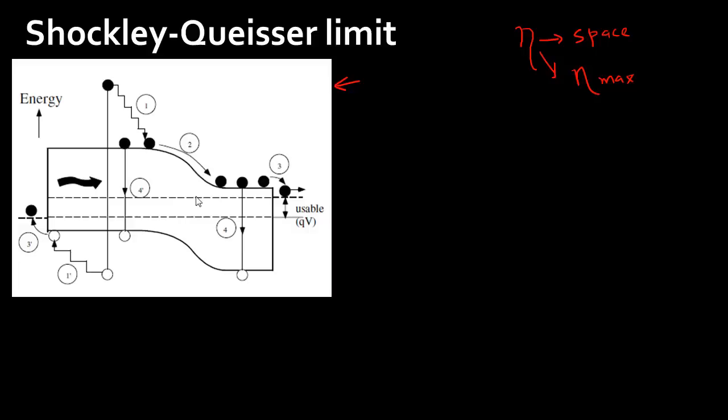Most colleagues of Shockley and Queisser approached the problem by considering PN junction-based solar cells made of a certain material — say, silicon — and considering all the loss mechanisms that can occur. Ideally, electrons and holes are collected at the two contacts, but a stray carrier might be collected at the wrong contact, or generated electron-hole pairs might recombine and emit a photon. Most people were using material properties to calculate this recombination mechanism.